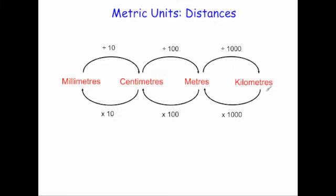Now let's look at going the other way. To go from kilometres to metres you multiply by 1000. To go from metres to centimetres you multiply by 100. And to go from centimetres to millimetres you multiply by 10.